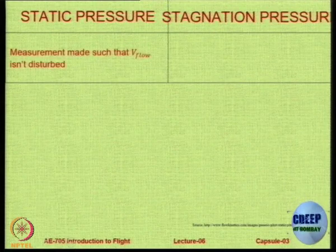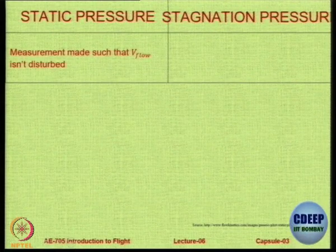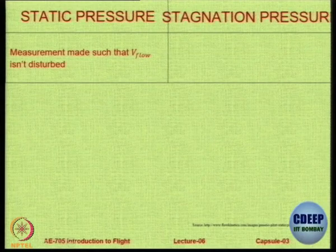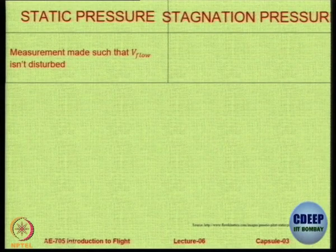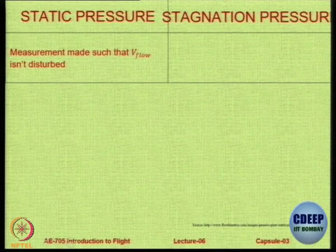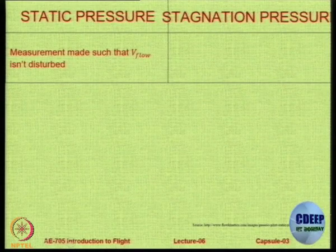Measurements made such that the flow is not disturbed are called static pressure measurements, and in static pressure measurement we have to be passive. In both cases one should not disturb the flow field as far as possible to get a true reading. In static pressure measurement we are not interested in changing the parameters of the flow. In stagnation pressure measurement we want to measure it when the flow is brought to rest, and that bringing to rest has to be done isentropically.